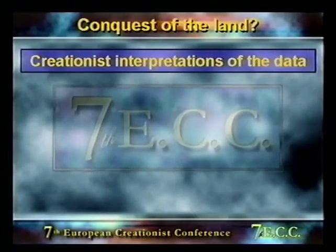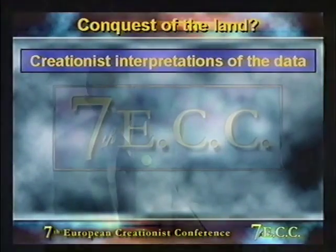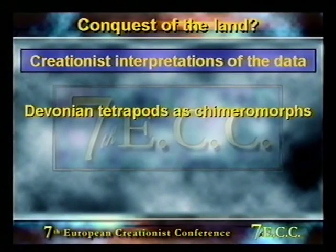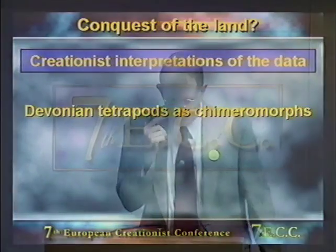Now let's look at creationist interpretations of the data, because there are challenges for us too. The first thing is that these Devonian tetrapods are chimeromorphs — mosaic forms that share features of two or more groups. We see a similar mosaic pattern in other groups, both fossil and living. Think about the duck-billed platypus: it has features associated with mammals such as hair and milk production, yet also features associated with reptiles like egg-laying. The best-known fossil example is Archaeopteryx, which has feathers but also characteristics like teeth and wing claws perhaps associated with reptiles.